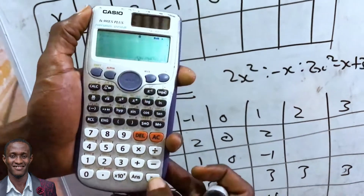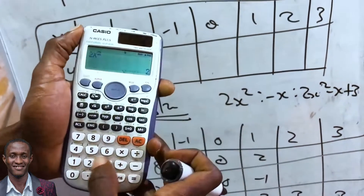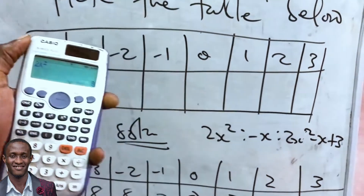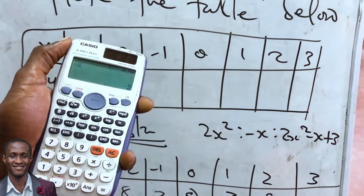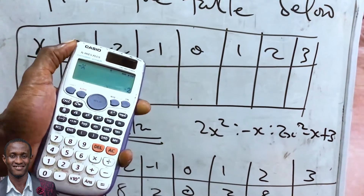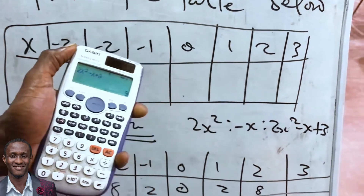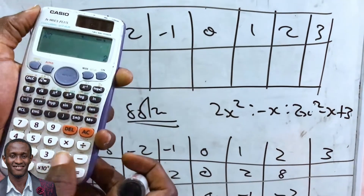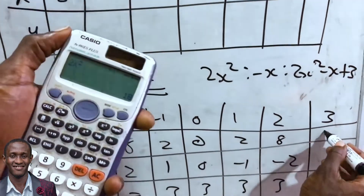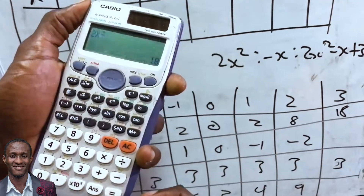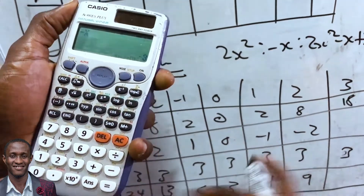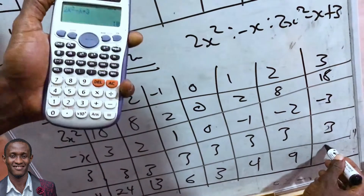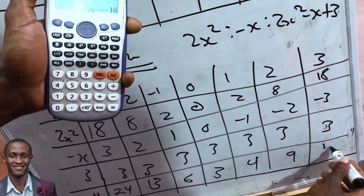For x = 1: 2x² = 2, -x = -1, y = 4. For x = 2: 2x² = 8, -x = -2, y = 9. For x = 3: 2x² = 18, -x = -3, y = 18. Note that the -3 and +3 cancel, leaving 18.